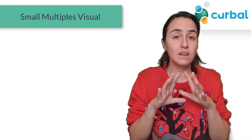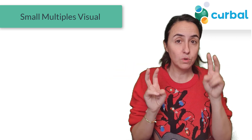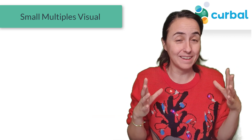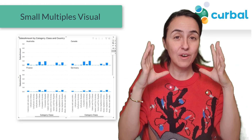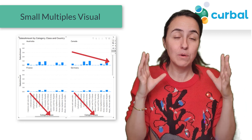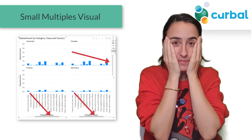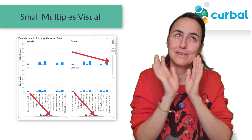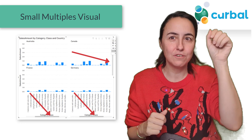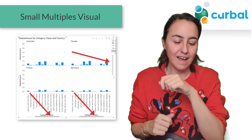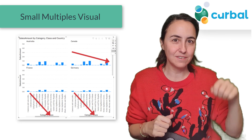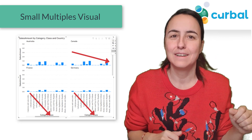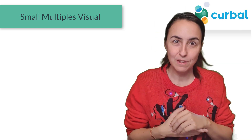When you drop it on the canvas, it will create a 2x2 grid, but you can expand it to 6x6. If you have more than 6x6, it will add scroll bars. I'm not a huge fan of scroll bars on BI visuals — you'll get scroll bars on the x-axis if you have many categories, and on the y-axis if you have many charts. So, not ideal — hopefully they will change that.